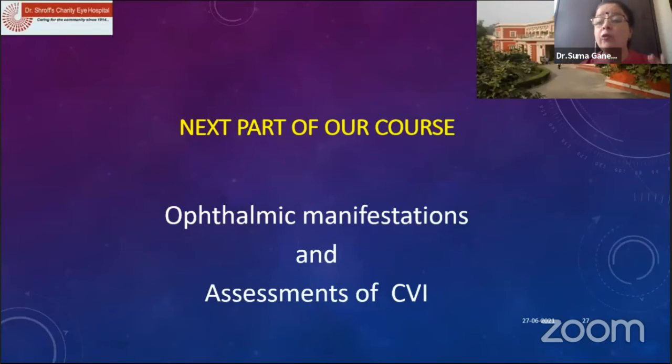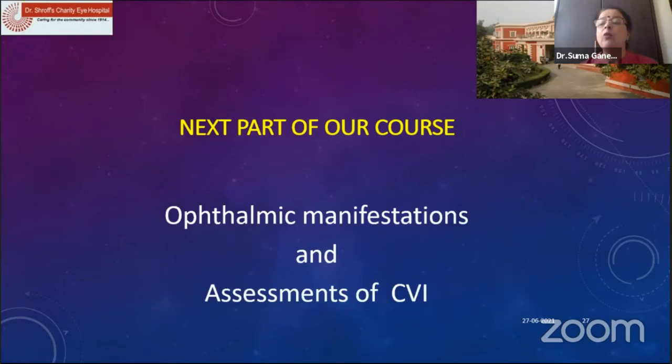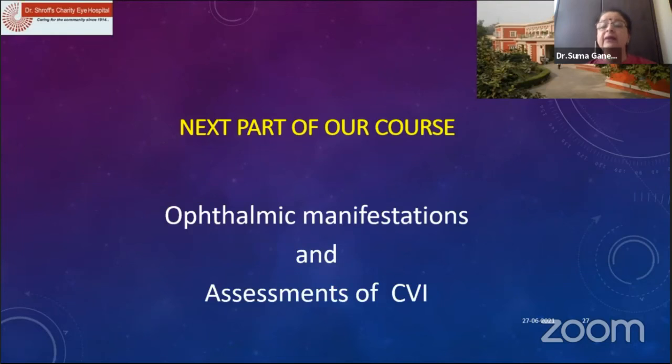So this is how we can detect CVI and understand its causes. Now we move to the next part of the course — when these children come, what are the ophthalmic manifestations we see and how do we assess them? We want to guide ophthalmologists in assessing children with CVI using simple tools, so that we can pick them up easily in the clinic and help these children.